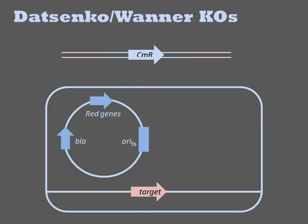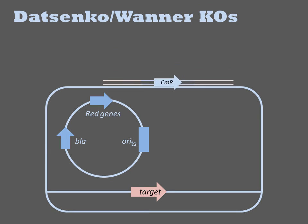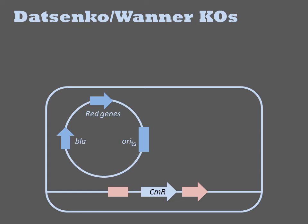PCR results in a double-stranded linear PCR product with homology to the genome on both ends. The cells containing the lambda red genes are transformed with this PCR product, usually by electroporation. Inside the cell, the lambda red genes cause the double-crossover recombination of the PCR product over the sequence homologous to the ends in the target. Because recombined cells contain the chloramphenicol resistance gene, they can be selected by growth on antibiotic-containing medium.